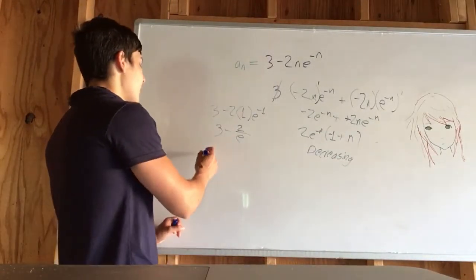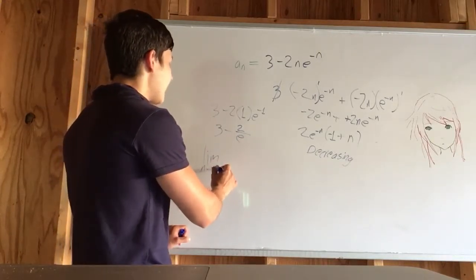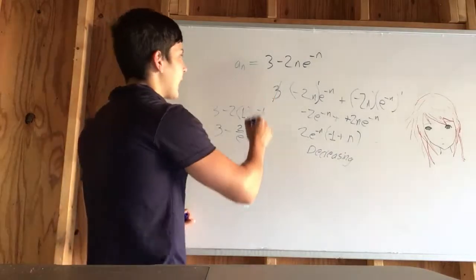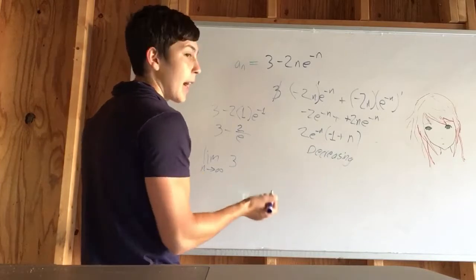But we still have to check if it's bounded all the way at the other side. All the way at the other side means at infinity. When you take the limit as n approaches infinity, does that converge or diverge? Because it may yet still be unbounded if it diverges.